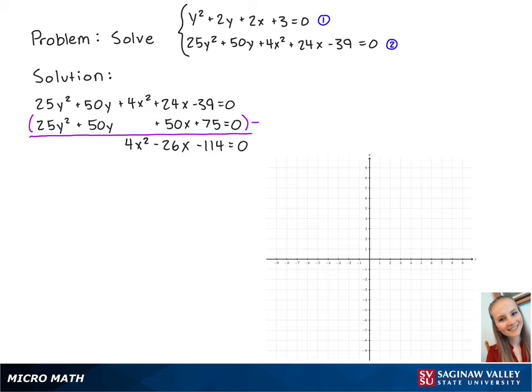To make this easier, we're going to divide both sides by 2 so that we have 2x² - 13x - 57 = 0.